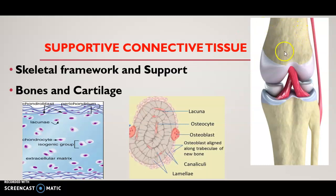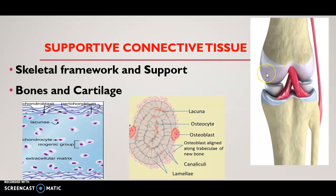This is a bone. The extension of the bone is called cartilage — this white part is the cartilage. That is the extension part of the bone.